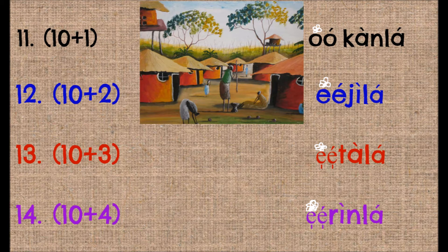For eleven — if you remember, one was 'okan,' so eleven is 'okan la.' If you have an idea of one, you will remember 'okan la.' In the previous video I told you that two is 'eji,' so twelve would be 'eji la.' I also told you that three was 'eta,' so thirteen is 'eta la.' If you remember, four was 'erin,' so fourteen is 'erin la.' However, from fifteen everything changes.